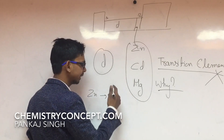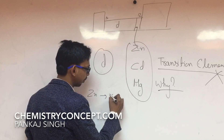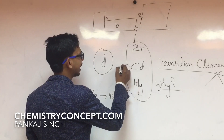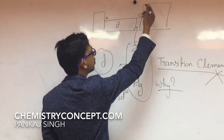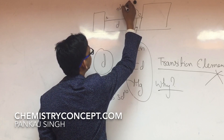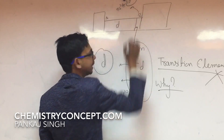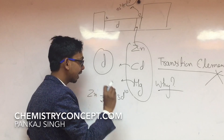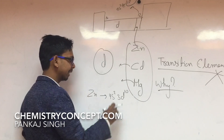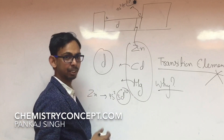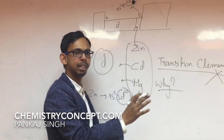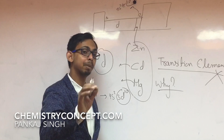If we talk about zinc, the electronic configuration of zinc is 4s2 3d10 — they are D10. Similarly, cadmium and mercury: all members of group 12 have the electronic configuration ns2 (n-1)d10, they are D10. They don't have an incompletely filled D orbital; they have a completely filled D orbital. For being a transition element, the D sub-shell must not be completely filled. Because they have a completely filled D sub-shell, they are not transition elements.